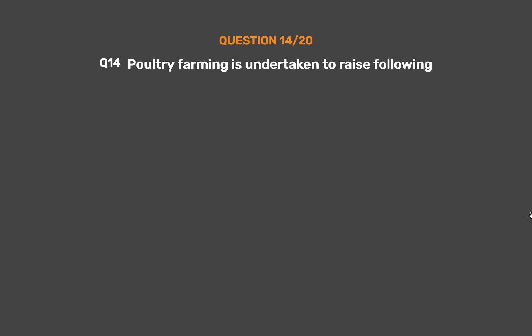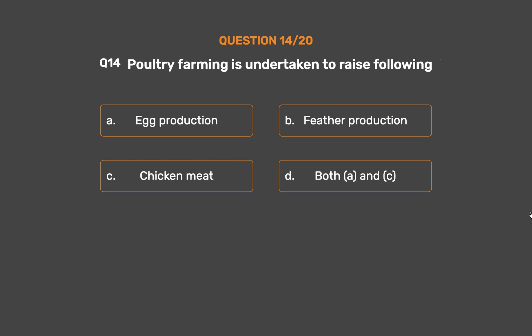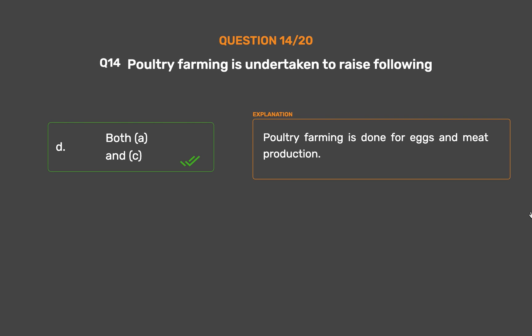Question No. 14. Poultry farming is undertaken to raise — Option A: Egg production. Option B: Feather production. Option C: Chicken meat. Option D: Both A and C. Poultry farming is done for eggs and meat production.